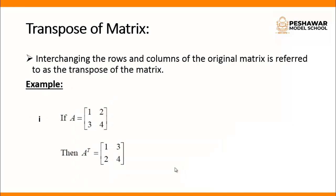The next topic is the transpose of a matrix. Interchanging the rows and columns of the original matrix is referred to as the transpose of a matrix. For example, suppose we have matrix A whose first row elements are 1 and 2, and second row elements are 3 and 4. When we take the transpose, written as A superscript T, the first row [1, 2] becomes the first column, and the second row [3, 4] becomes the second column.